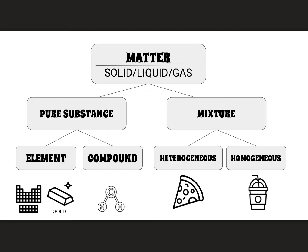Matter can also be classified into two types. Some matter is a pure substance — this is matter that is either an element on the periodic table, such as gold, or a compound made up of one or more elements in molecule form, such as H₂O (water). Most everything we interact with daily, however, is a mixture. There are two types: heterogeneous mixtures, like pizza, which can be easily separated into crust, cheese, and toppings; and homogeneous mixtures, which are uniform throughout — like a Starbucks drink that has been fully stirred together.